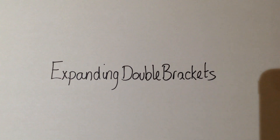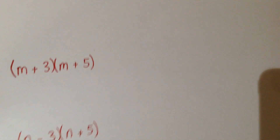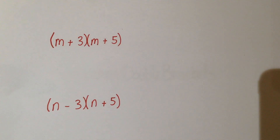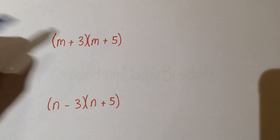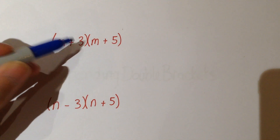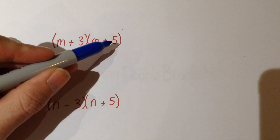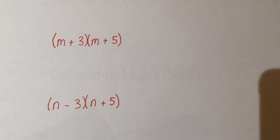This is your guide to expanding double brackets. When we're expanding brackets we need to make sure that we multiply everything in the first bracket by everything in the second bracket. Now there are a couple of methods of doing this.